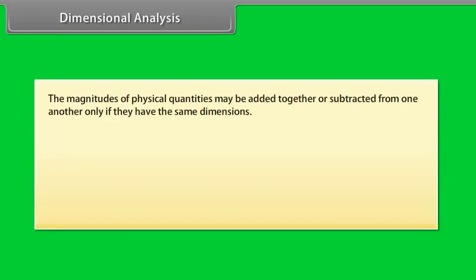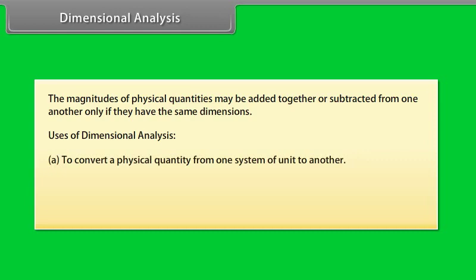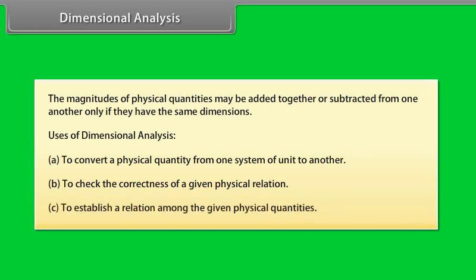Dimensional analysis. The magnitudes of physical quantities may be added together or subtracted from one another only if they have the same dimensions. Uses: dimensional analysis. A, to convert a physical quantity from one system of unit to another. B, to check the correctness of a given physical relation. C, to establish a relation among the given physical quantities.